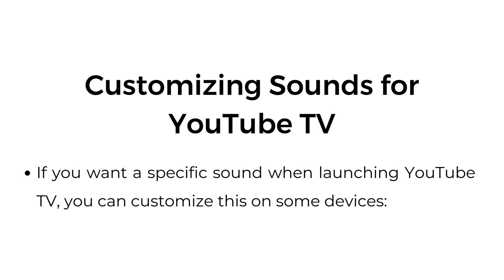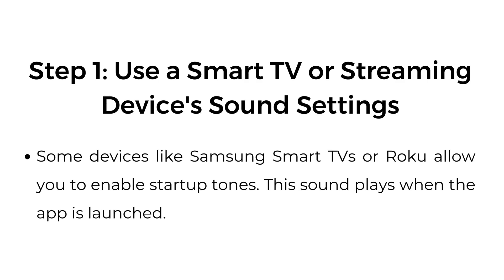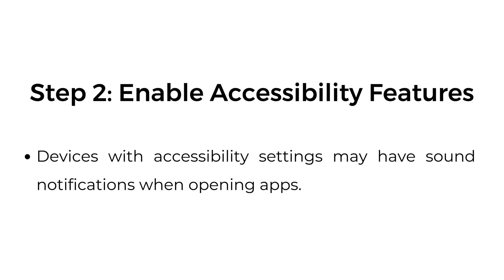If you want a specific sound when launching YouTube TV, you can customize this on some devices. Step 1: Use a Smart TV or streaming device's sound settings. Some devices, like Samsung Smart TVs or Roku, allow you to enable startup tones. This sound plays when the app is launched.